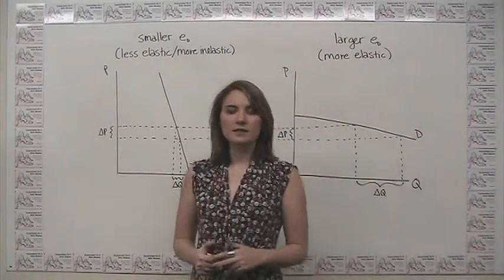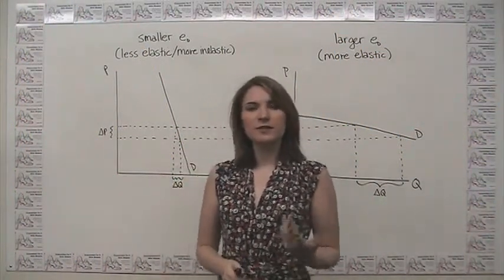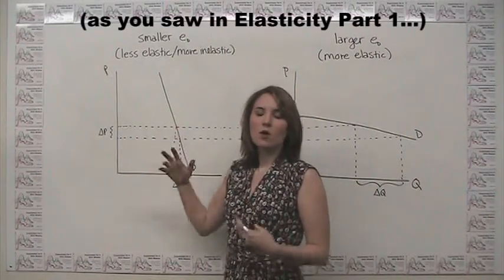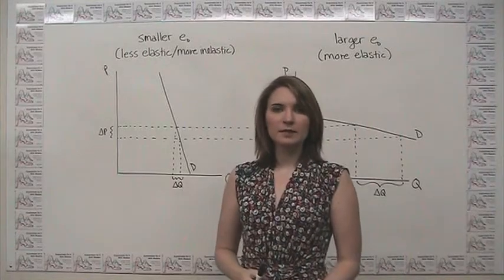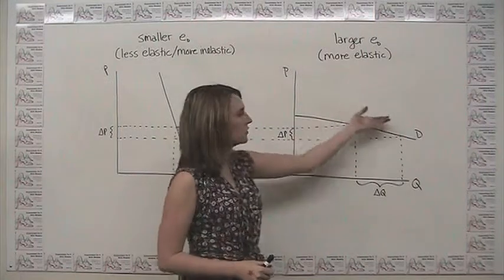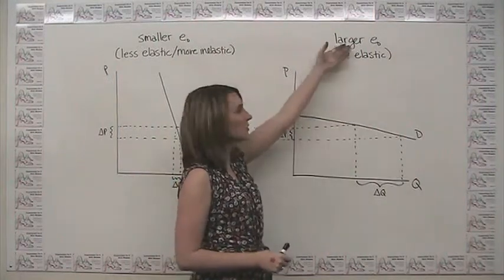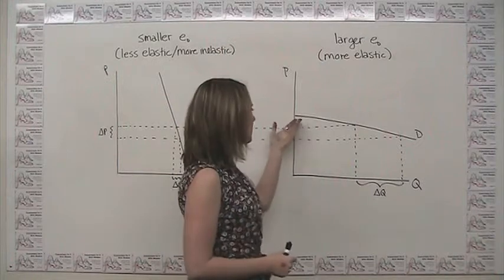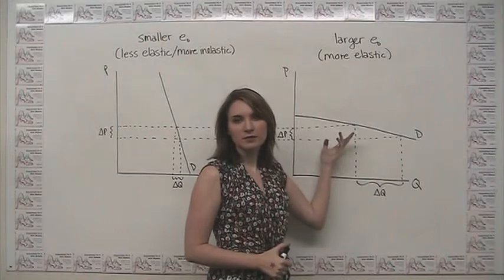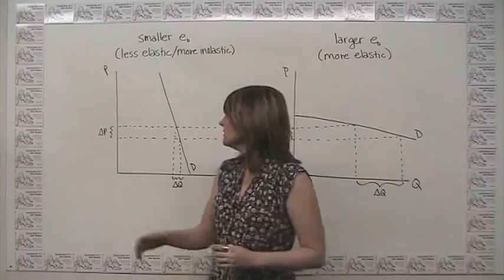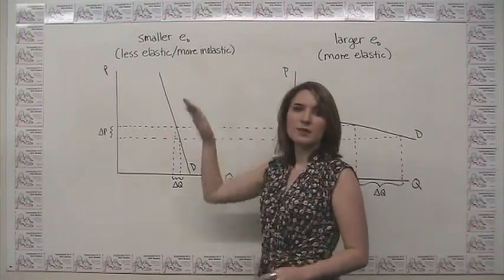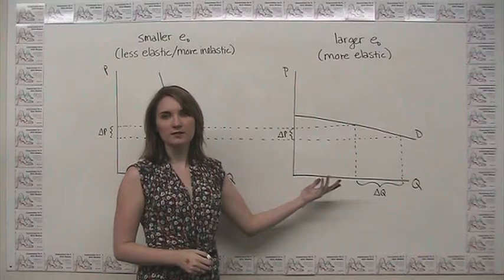Despite the fact that the particular value of elasticity changes as we move along a straight-line demand curve, we still can say that approximately a more elastic demand curve, or a demand curve with higher elasticity — a bigger number for elasticity of demand — corresponds to what we call a shallower or flatter demand curve. We can see here two examples: one with a smaller elasticity of demand and one with a larger elasticity of demand.